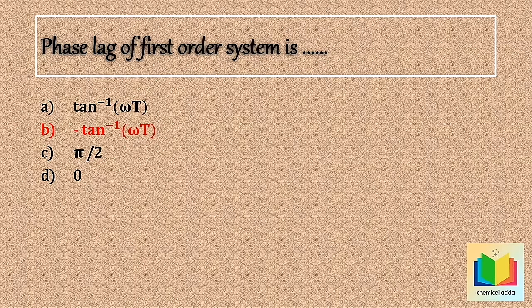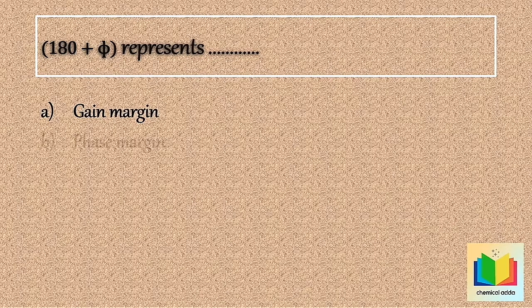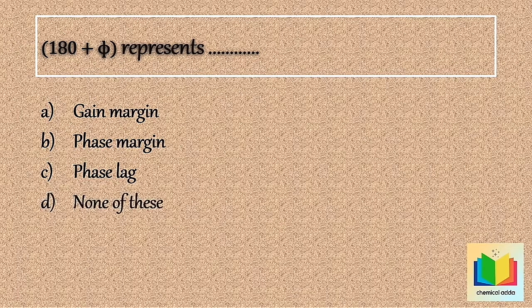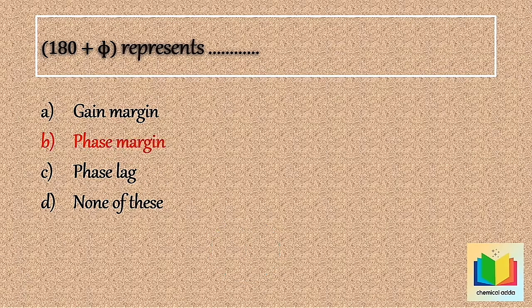Now next question — 180 plus phi represents, where phi is equal to phase angle: Option A) gain margin, Option B) phase margin, Option C) phase lag, Option D) none of these. Your time starts now. 10, 9, 8, 7, 6, 5, 4, 3, 2, 1. Stop. Answer is option B: phase margin.